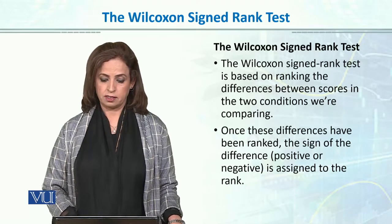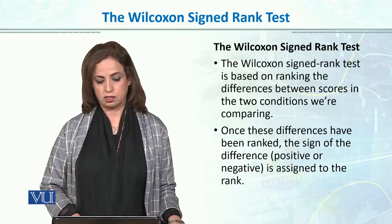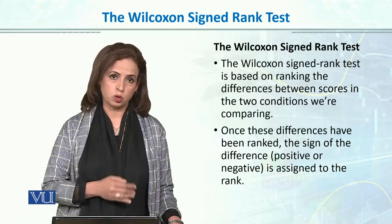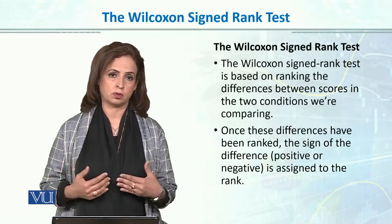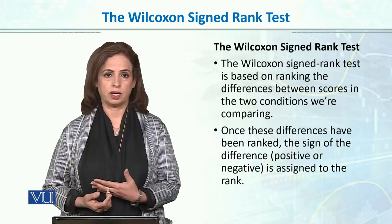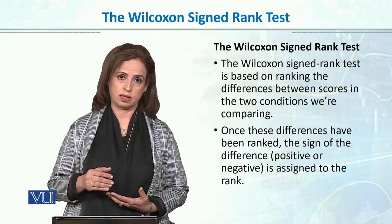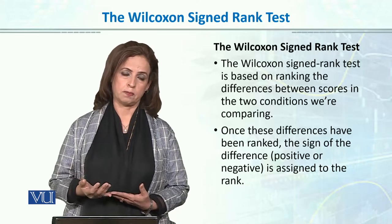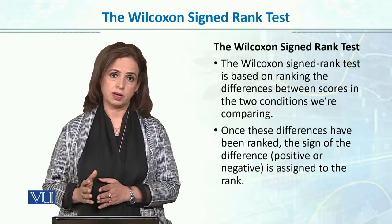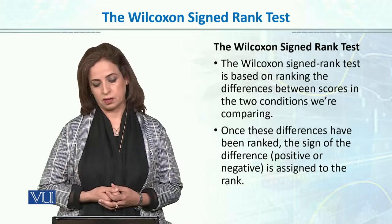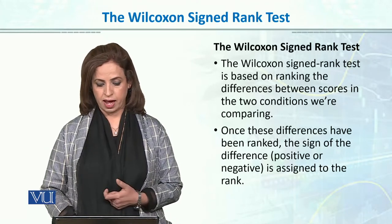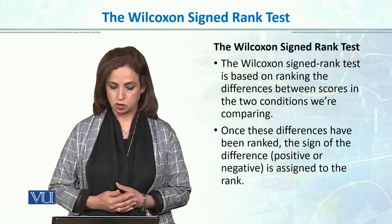Wilcoxon signed rank test is based on ranking the differences between scores in the two conditions. We have time 2 scores and time 1 scores, and we find the difference. We convert scores into ranks, find the difference, and then the sign of the difference — positive or negative — is assigned to the rank.